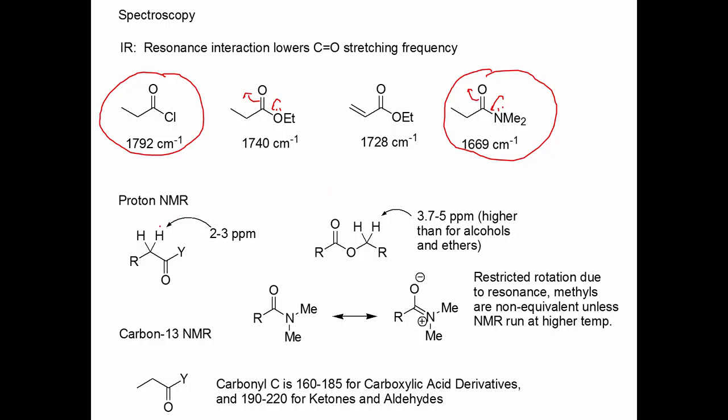If we look at proton NMRs, the hydrogen adjacent to a carbonyl group is 2 to 3 ppm, just like in all the other types of carbonyl groups. This is a unique type of hydrogen in an ester. We see it a little bit higher than what it is in the corresponding alcohols or ethers. It starts at 3.7 for a methyl ester and goes up to about 5 for like an isopropyl ester.